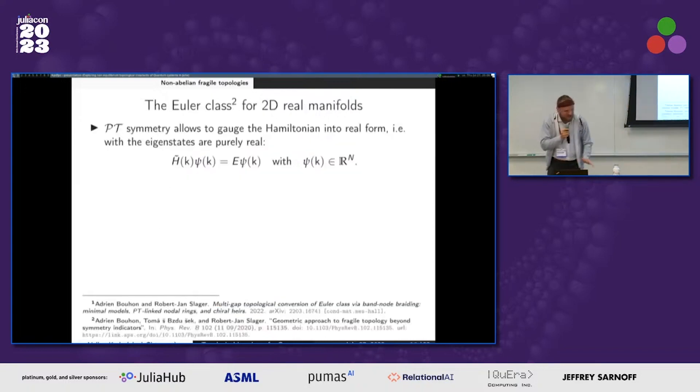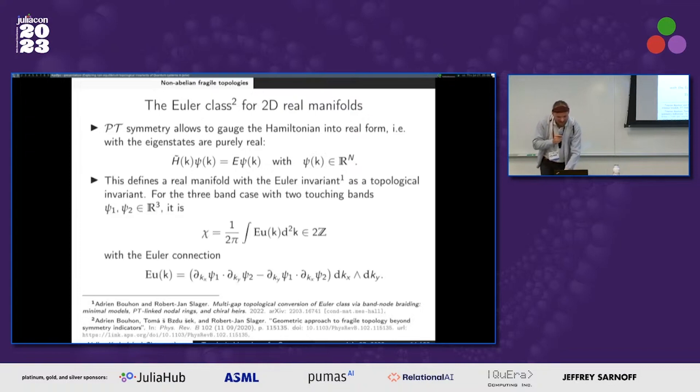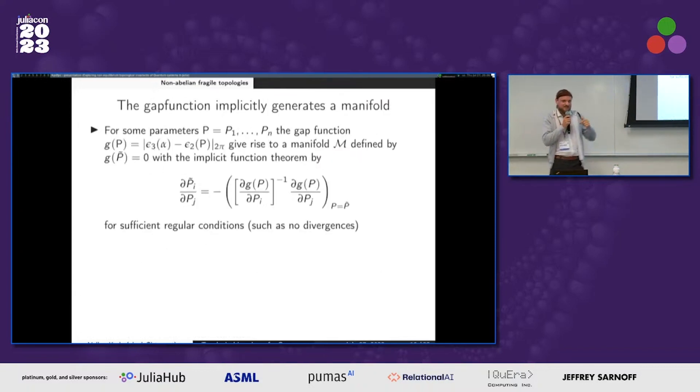And there is a new topological invariant associated with this model, which is the Euler class, and there is some kind of new Euler connection which also gives you some rise to curvature and a topological invariant. Now the question is how can you find this in a real system? For this you need to know where the gap closes.